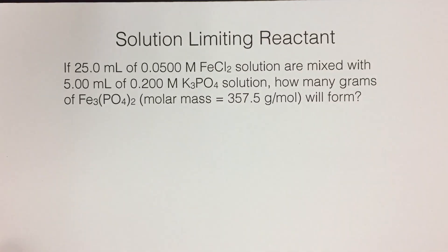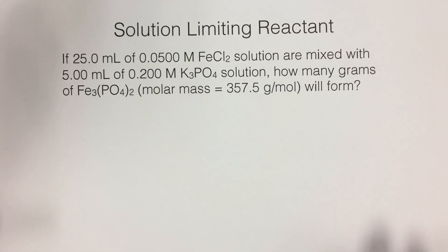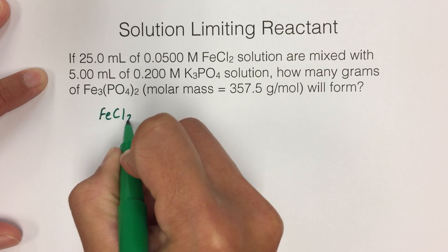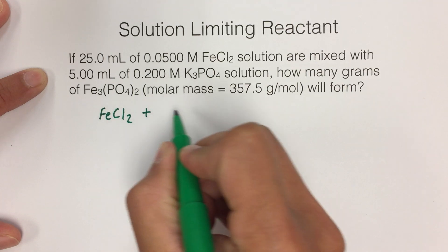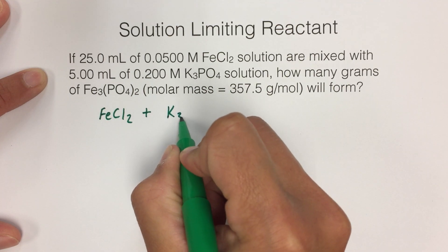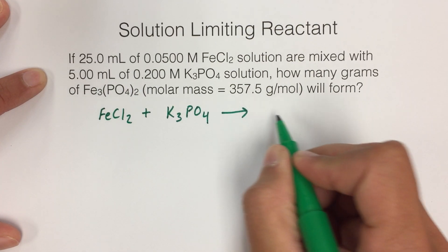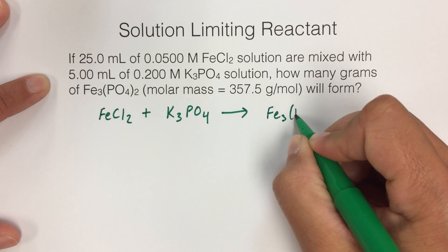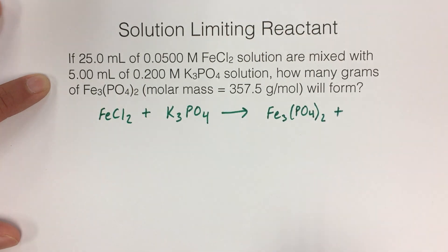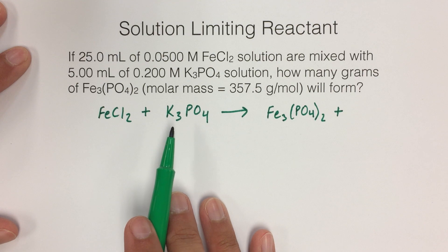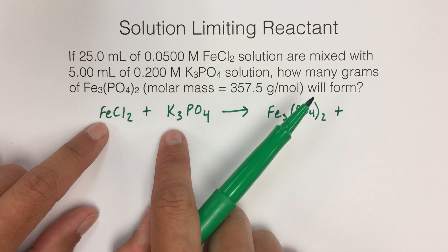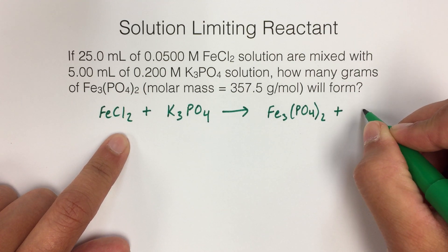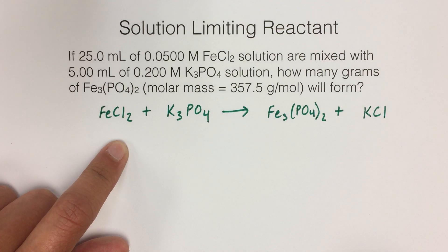Since this is stoichiometry, it's a limiting reactant problem, the first thing we are going to need is a balanced chemical equation. So we have FeCl2 mixed with potassium phosphate. It says how many grams of Fe3(PO4)2 will form, so we know that's going to be one product. But there is going to be another product because hopefully you recognize that this is a double replacement reaction. The cations and anions are switching, right? So iron gets paired with phosphate and potassium gets paired with chloride. So the other product is potassium chloride.